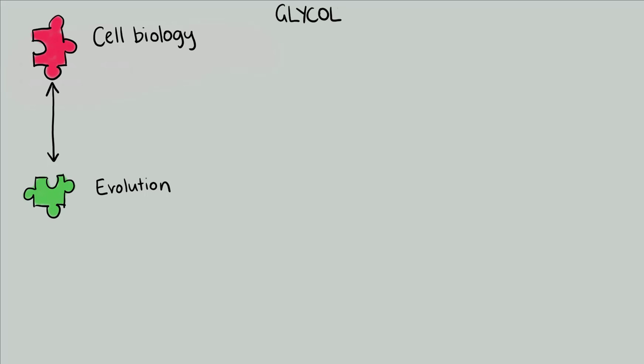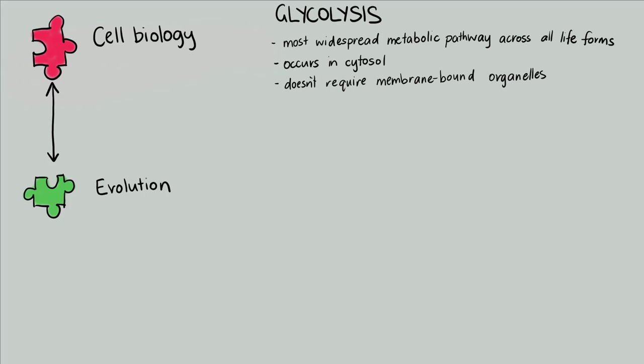Taking a look at glycolysis, scientists have found that it is one of the most widespread metabolic pathways across all life forms. Pretty much everything does it. It also occurs in the cytosol, which means it doesn't require any membrane-bound organelles. This has led scientists who look at cells to think that perhaps glycolysis existed very early on.